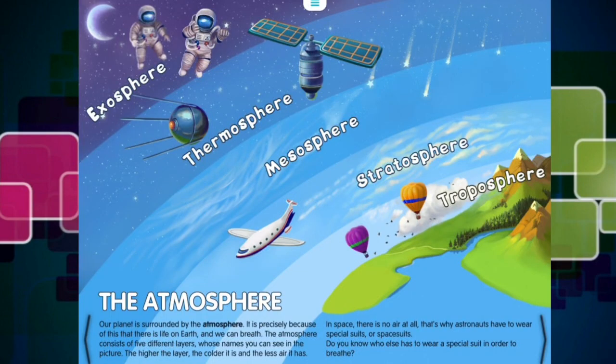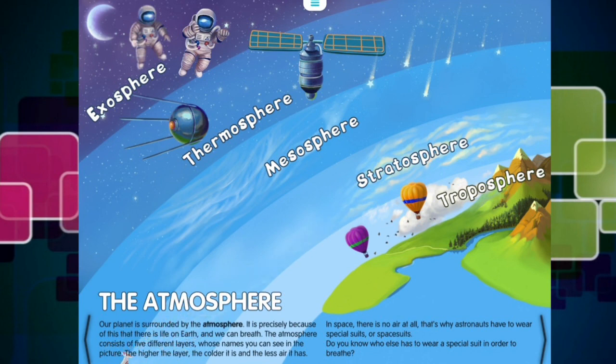Our planet is surrounded by the atmosphere. It is precisely because of this that there is life on Earth, and we can breathe. The atmosphere consists of five different layers, whose names you can see in the picture. The higher the layer, the colder it is, and the less air it has. In space, there is no air at all. That's why astronauts have to wear special suits, or space suits. Do you know who else has to wear a special suit in order to breathe?